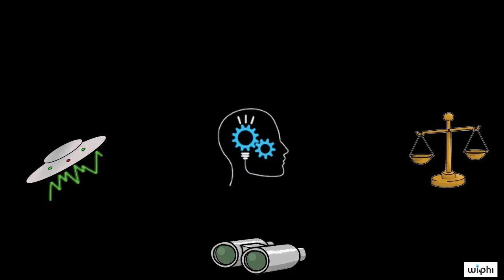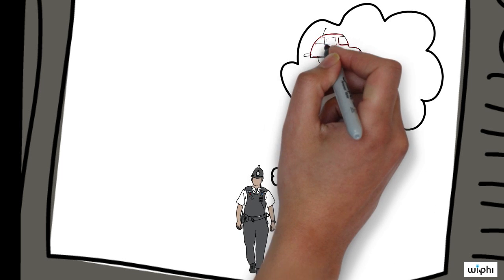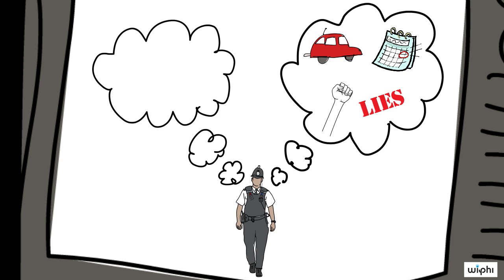Think of how a TV detective solves a crime. Suppose she knows that the murder weapon was found in Smith's trunk. Smith doesn't have an alibi. Smith had a motive, and Smith failed the lie detector test. The best explanation for all this evidence is that Smith's the murderer, and so the detective believes that Smith is the murderer, and for good reason.